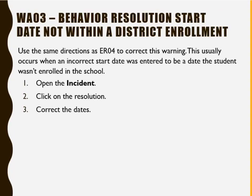The next warning we'll discuss is Behavior Resolution Start Date Not Within a District Enrollment. Use the same directions as Error 4 to correct this warning. This usually occurs when an incorrect start date was entered to be a date the student wasn't enrolled in the school. Open the incident, click on the resolution, correct the dates, hit Save, change the status from In Progress to Complete, and click Save to exit the behavior incident.